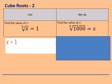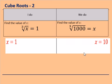For the We Do: cube root of 1,000 — what number cubed equals 1,000? What number times by itself 3 times equals 1,000? The answer is x equals 10. 10 times 10 times 10, or 10 cubed, equals 1,000. So the cube root of 1,000 equals 10. Give yourself a tick in green pen if you got that.